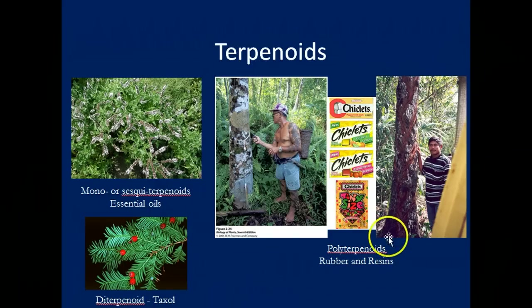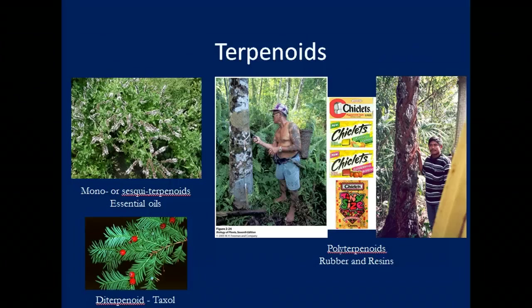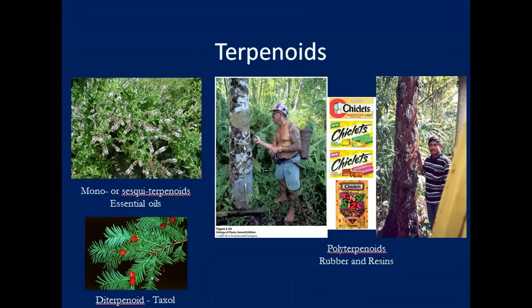Another polyterpenoid is resin. Anytime a plant produces a clear resin, it's usually a terpenoid. Pine trees, for example, have lots of resins — that's a type of terpenoid. The chicle tree, which you can see here, produces a type of terpenoid resin called chicle, and the chicle tree was the source of the first type of gum, which led to the development of Chiclets.